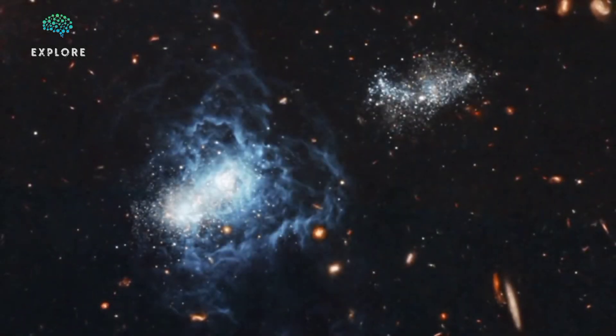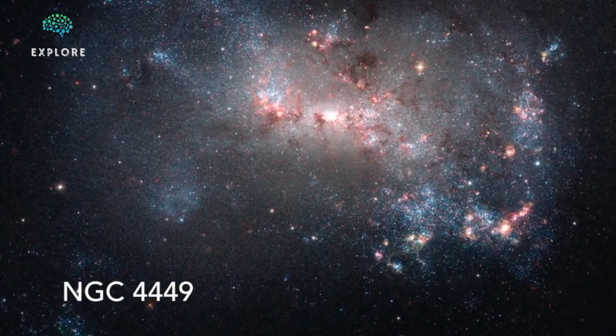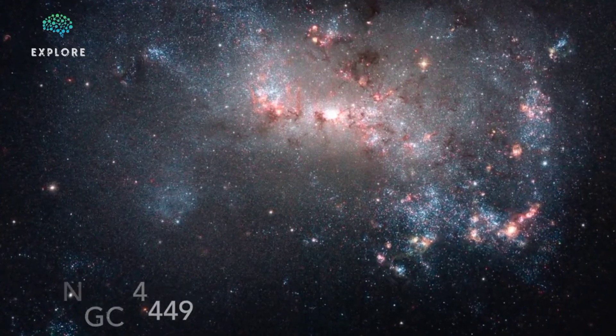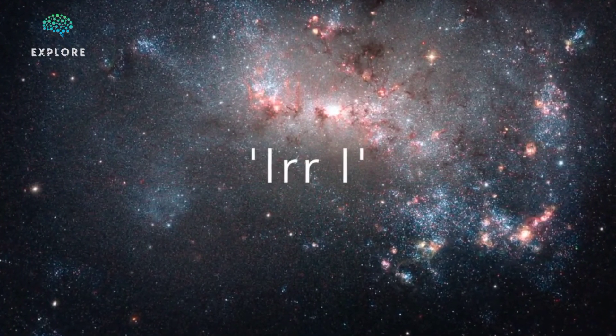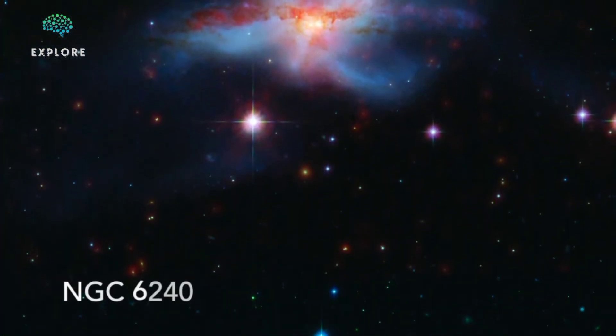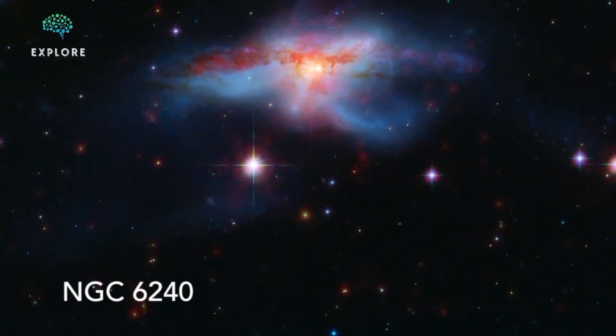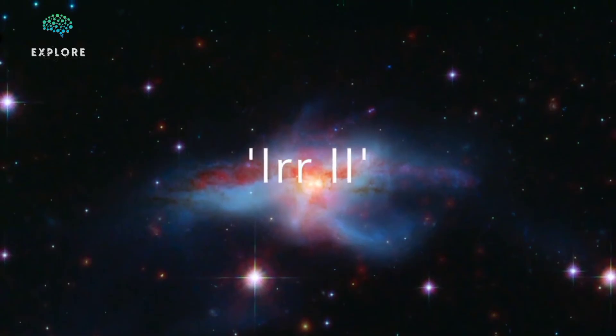Irregular galaxies are just that, irregular. They don't have a single common shape. Irregular galaxies are among the smallest galaxies scientists have observed. However, they can also be very bright. Like spiral galaxies, irregular galaxies are often filled with gas, dust, and lots of bright young stars. About 20% of nearby galaxies are irregular galaxies.